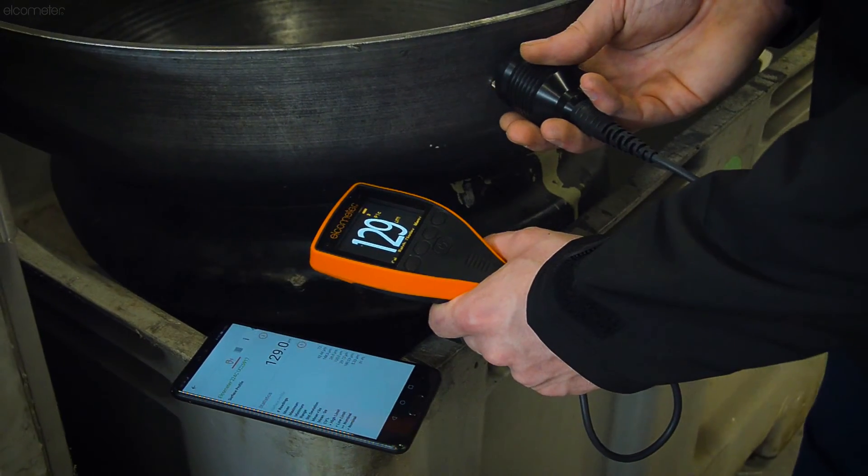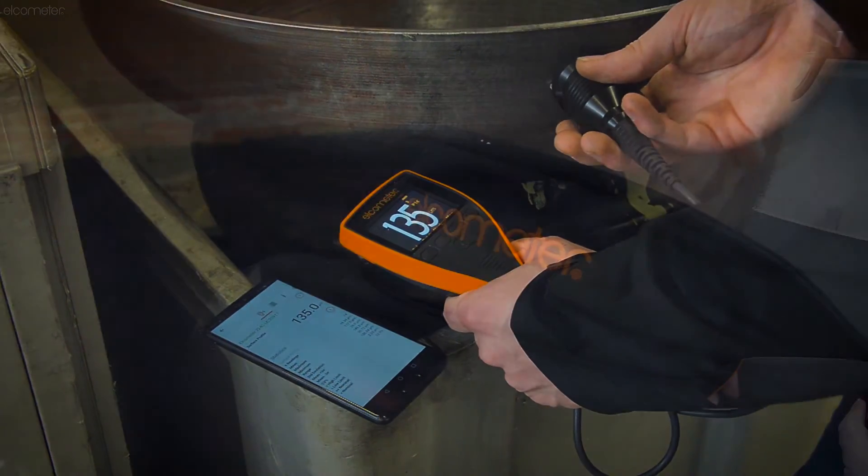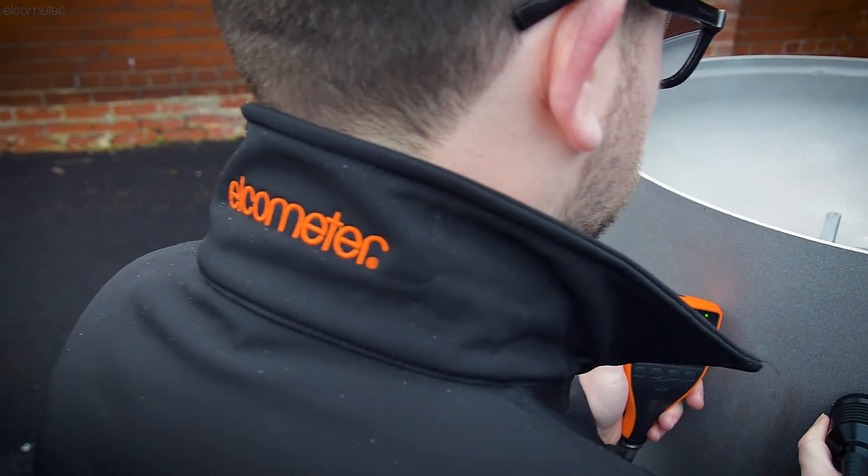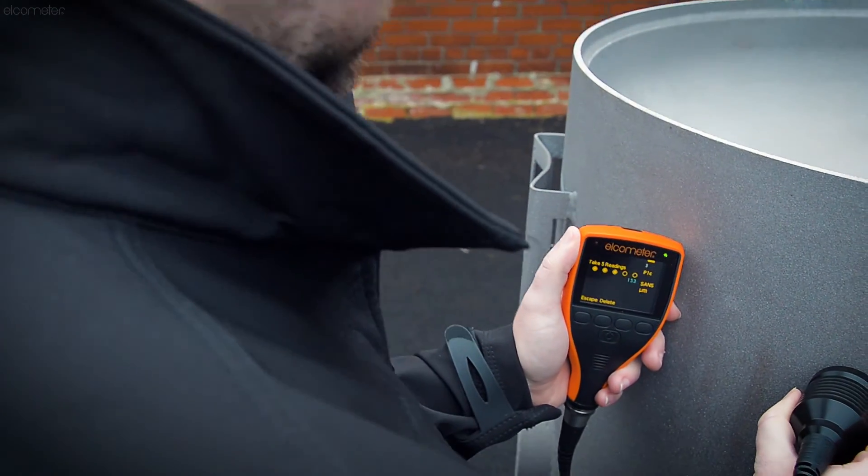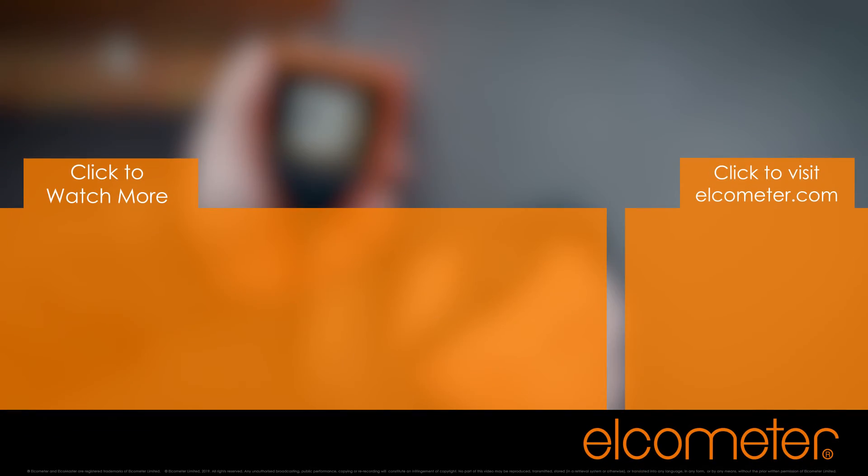So when you're measuring surface profile, let the Elcometer 224 and ElcoMaster app take all the effort. For more information and training on the Elcometer 224 Digital Surface Profile Gauge, click on one of the links on screen or visit Elcometer.com. And please don't forget to subscribe to the Elcometer channel to be notified of any new videos.